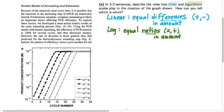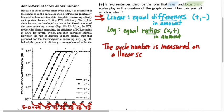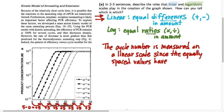So which is which in this particular graph? Let's look first at the horizontal axis. The tick marks on the horizontal axis, which are all separated by an equal distance on the line, are also separated by an equal difference of plus 5 each time. That means that the horizontal axis, which depicts the cycle number in the PCR reaction, is measured on a linear scale, because equal distances correspond to equal differences in numbers of cycles — in this case, separated by equal differences of plus 5.